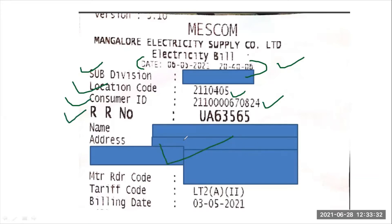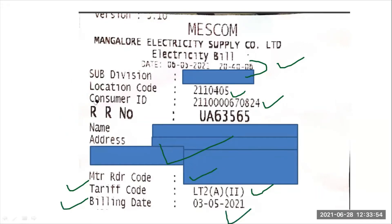The RR number is also different for each consumer. The name and address are available on the bill, and the meter code is also mentioned. The customer category shown here is LT2. There are different categories such as LT2 and LT3; since this is a domestic customer, it falls under the LT2 category.